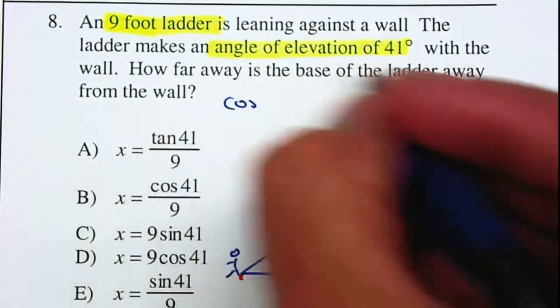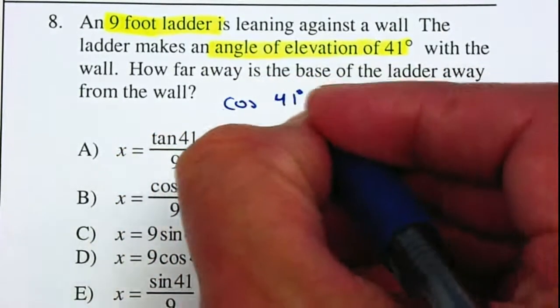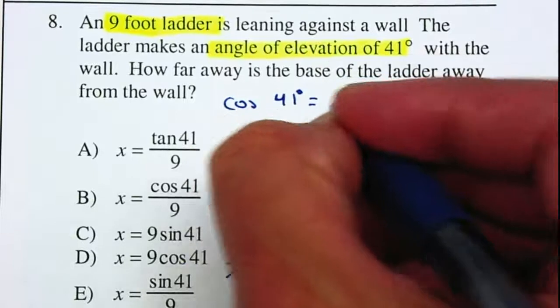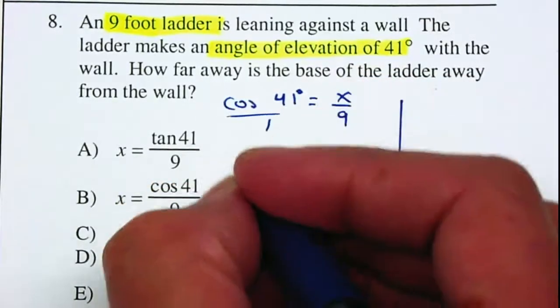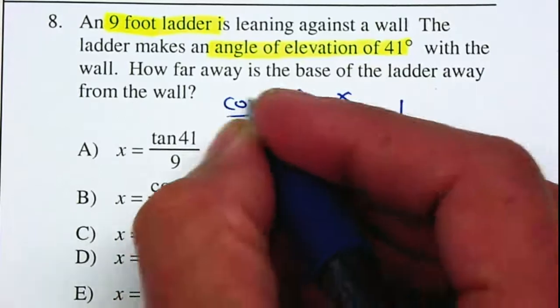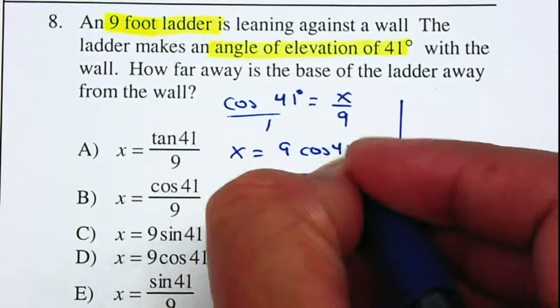So the cosine of 41 degrees is equal to adjacent over hypotenuse. I'm going to place it over one. I'm going to cross multiply. So X is equal to nine multiplied by the cosine of 41 degrees.